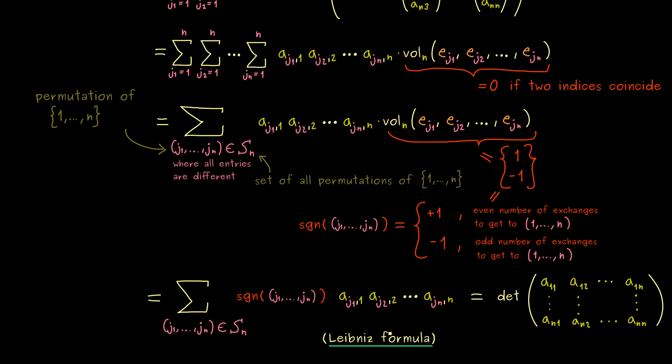And now indeed it tells us exactly what the determinant of a matrix is. You see, you essentially just multiply the entries of a matrix, but you have n factors. And each row and column only occurs once.